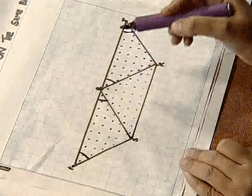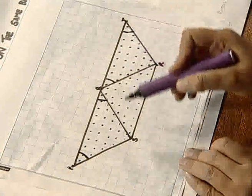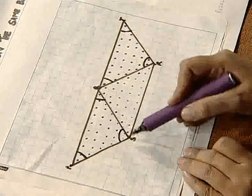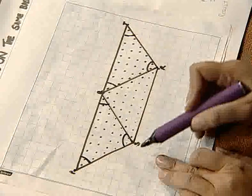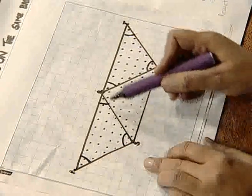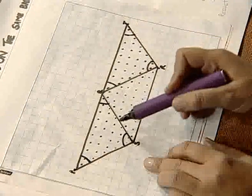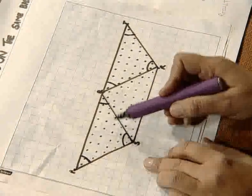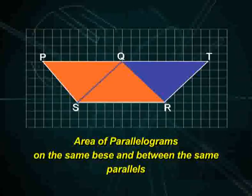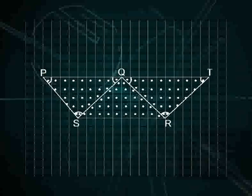Since angle P equals angle Q and angle Q equals angle T, angle S becomes equal to angle R in triangles PQS and QTR. So we observe that in parallelograms PQRS and QTRS, the two triangles PQS and QTR are equal in area as proved, and triangle QRS is common to both parallelograms. Therefore, we find these two parallelograms are equal in area. We have verified by this activity that the areas of two parallelograms PQRS and QTRS having the same base and between the same parallels are equal in areas.